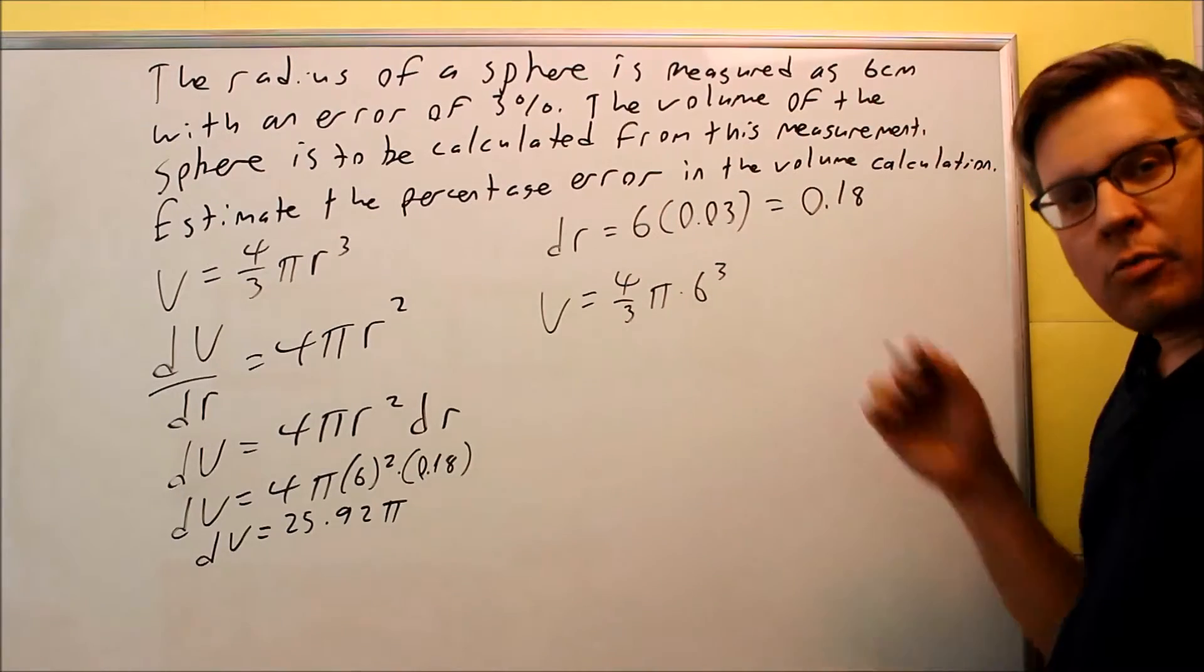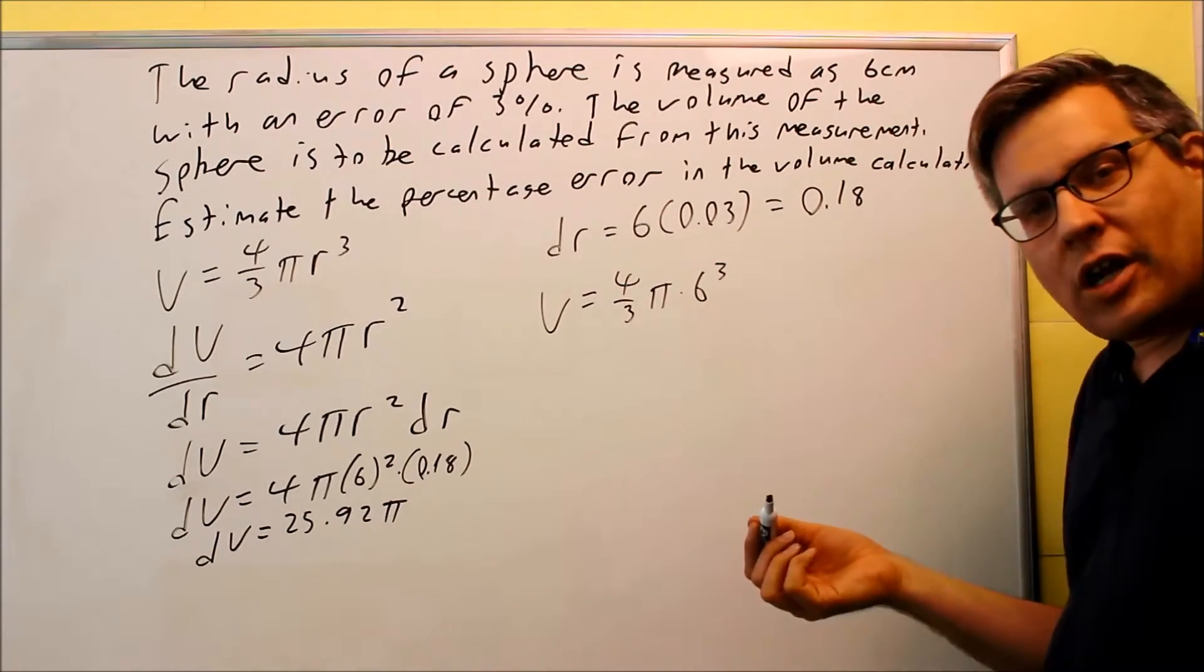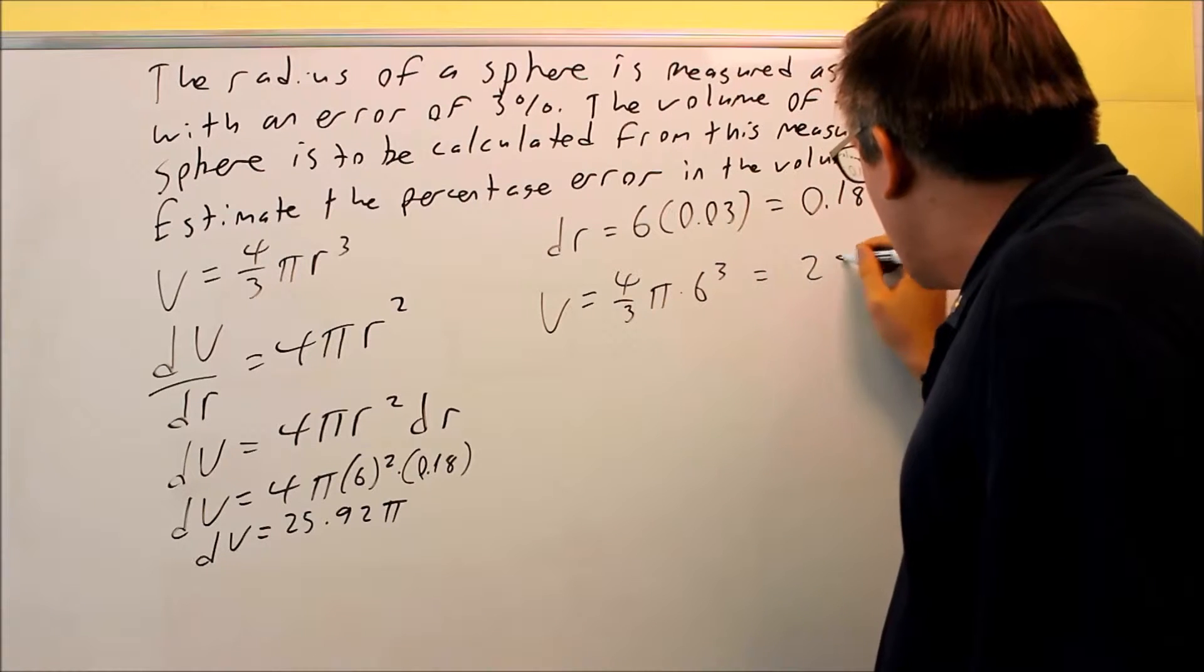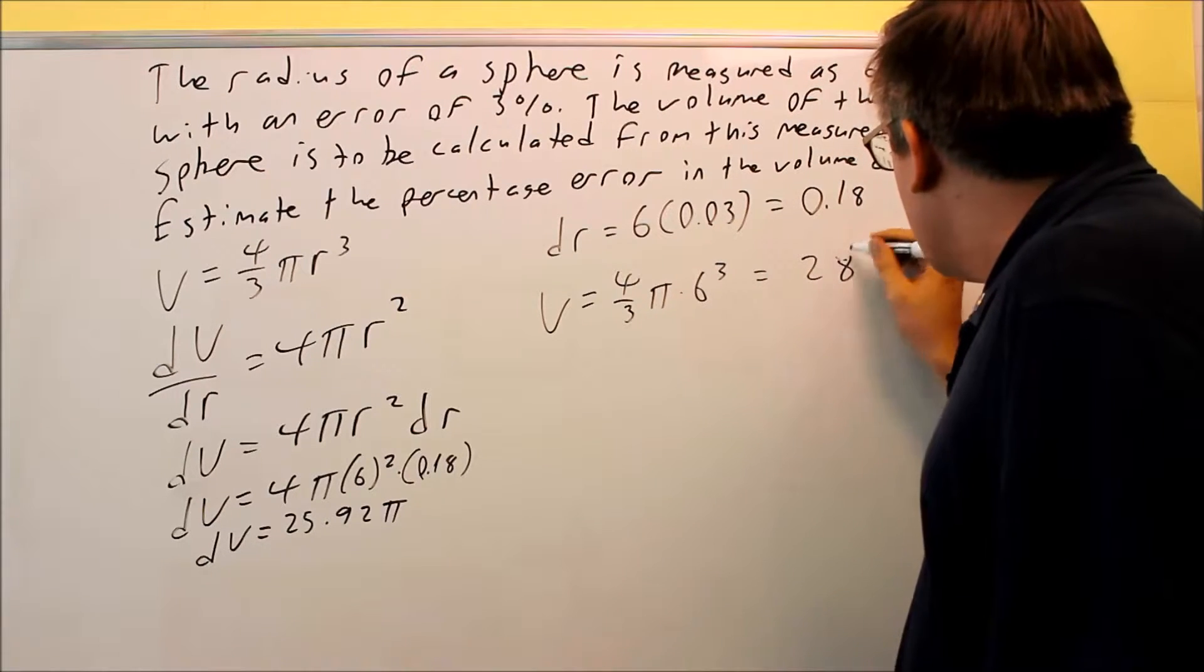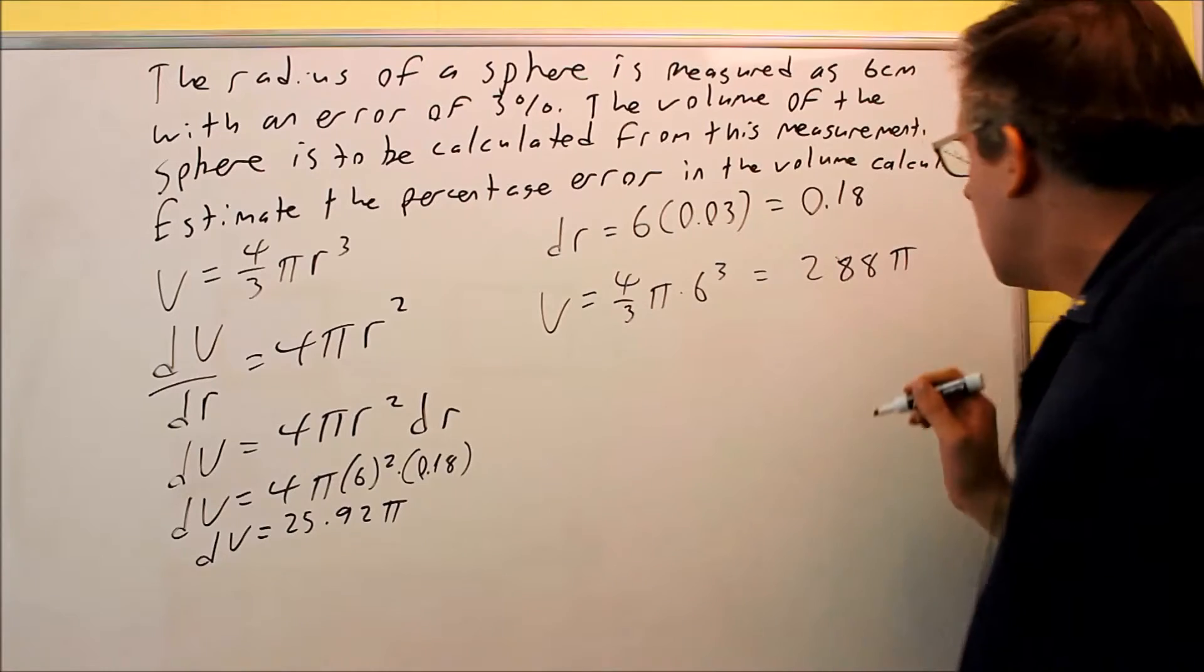I'll basically take this amount, divide it by the regular amount, and that will tell me how much error I have with this. So if I work that out, I'm going to get 288π, and again, this would be centimeters cubed here.